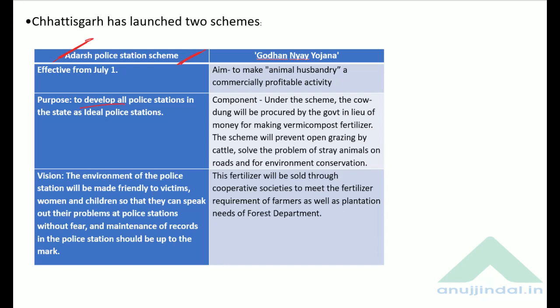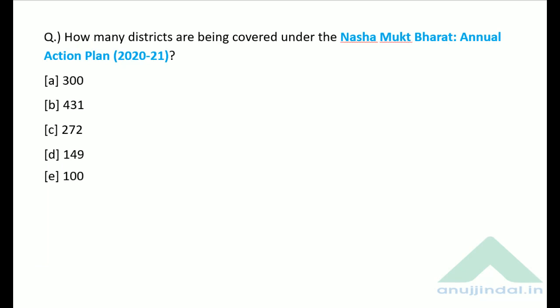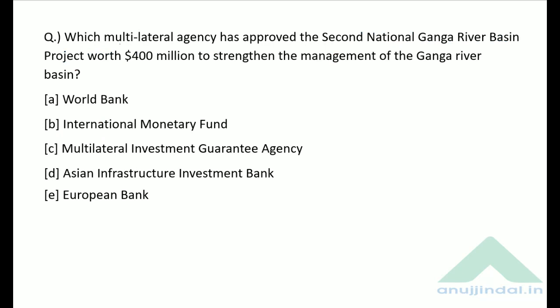How many districts are being covered under the Nasha Mukt Bharat Annual Action Plan 2021? Recently the Nasha Mukt Bharat program was launched. A total of 272 districts are covered under it — these 272 districts belong to states where the number of drug addicts is higher.